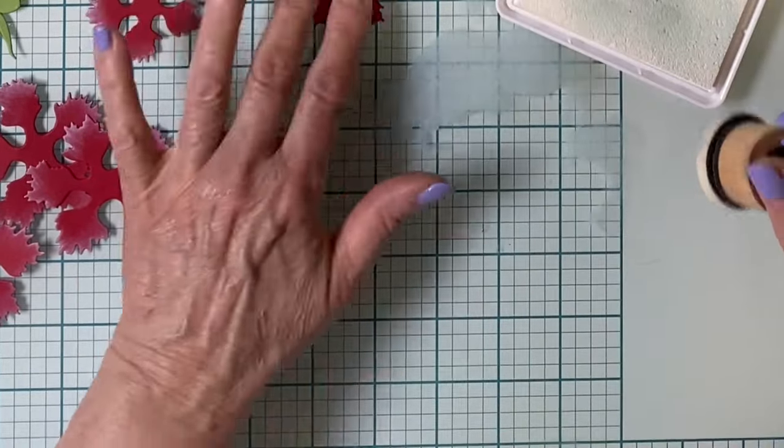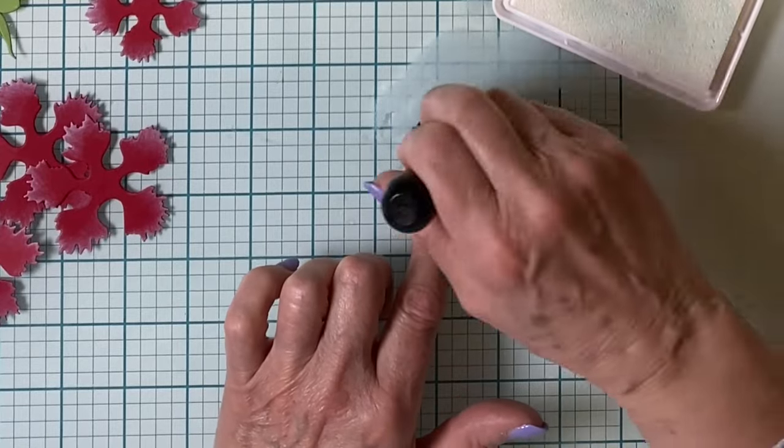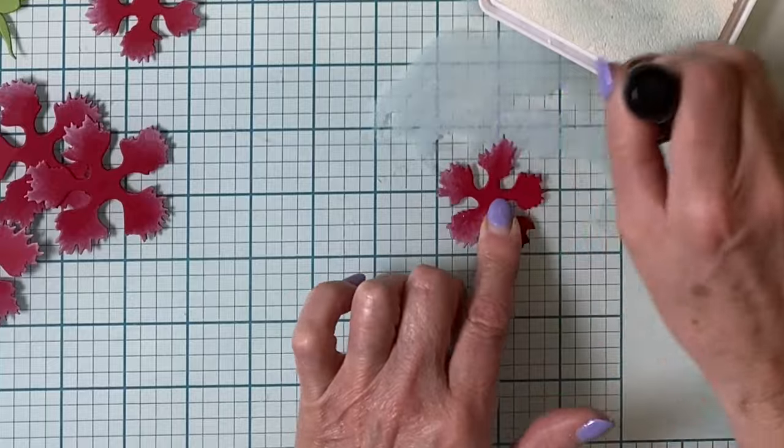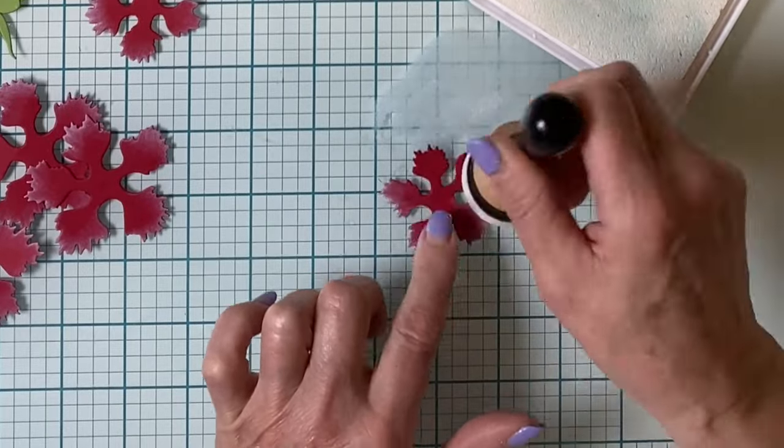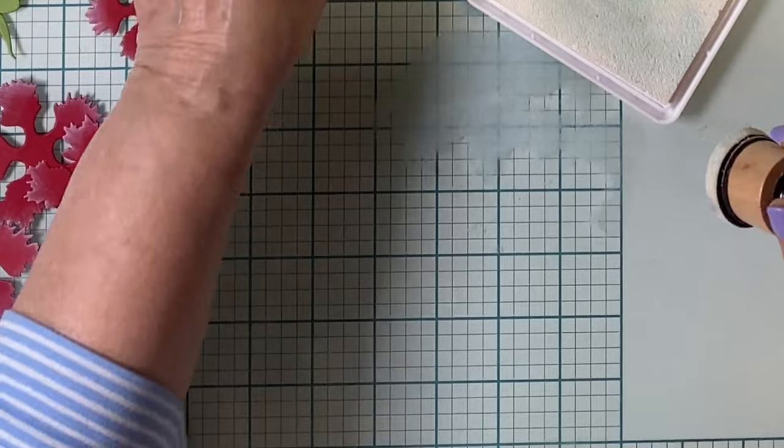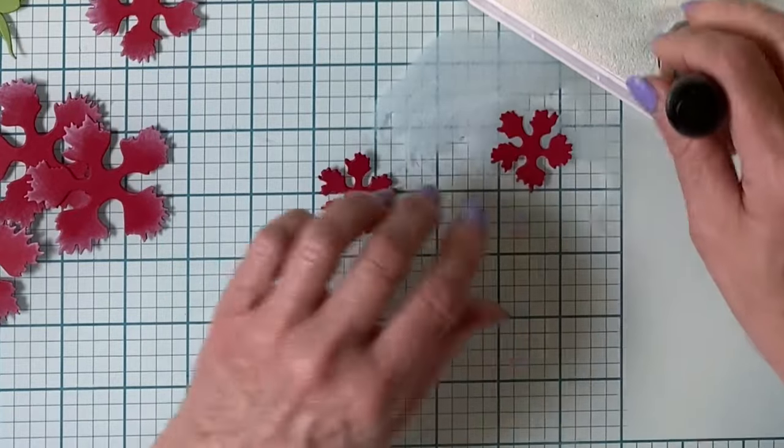This carnation was die cut from red cardstock. I'm starting off by applying some white pigment ink to the petal edges to provide some pretty highlights. I've done this for all of the petal layers except the three smallest ones.